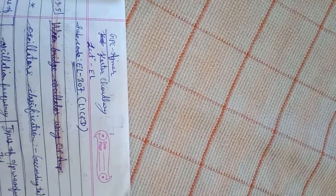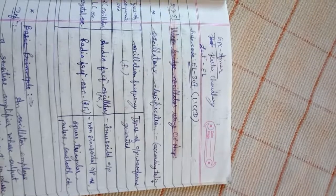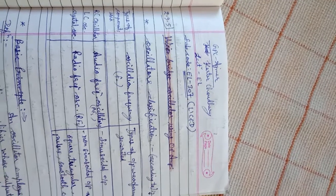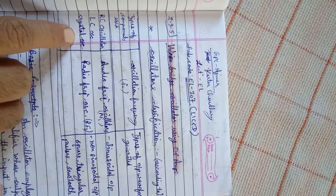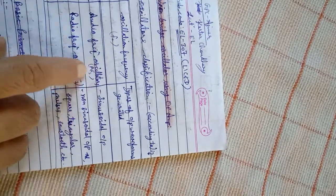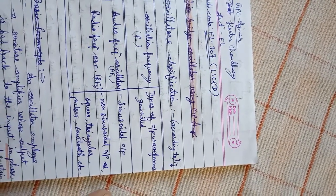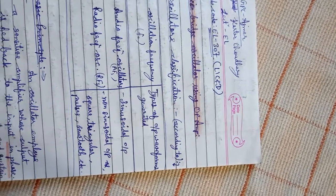Before starting Wien bridge and RC oscillator, we will cover the basics of oscillators. First, we will start with the classification of oscillators. We may classify oscillators in different ways: by types of components used — RC, LC, crystals — by oscillation frequencies such as audio frequency oscillators and radio frequency oscillators, and another classification is by output waveforms.